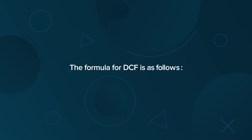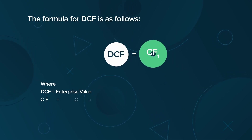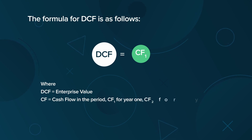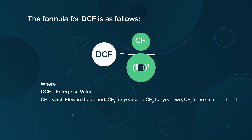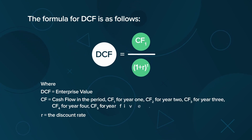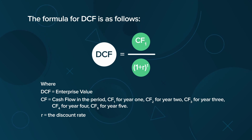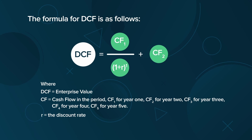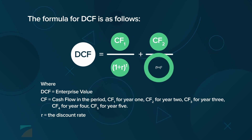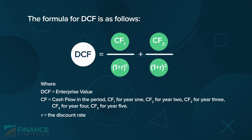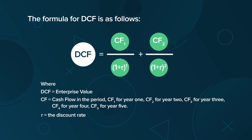The formula for DCF is as follows. Take the future cash flows for year one, then divide by 1 plus R, which represents the discount rate or WACC, raised to the first power. Then add the future cash flows for year two, divided by 1 plus R, or the WACC, raised to the second power.